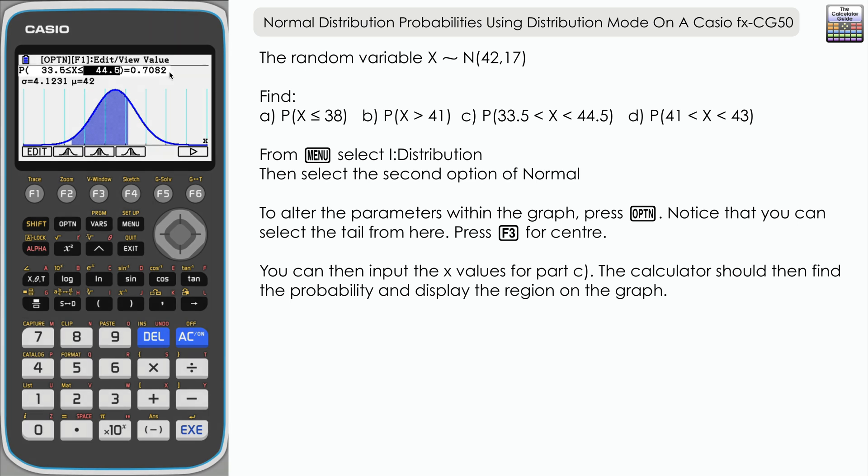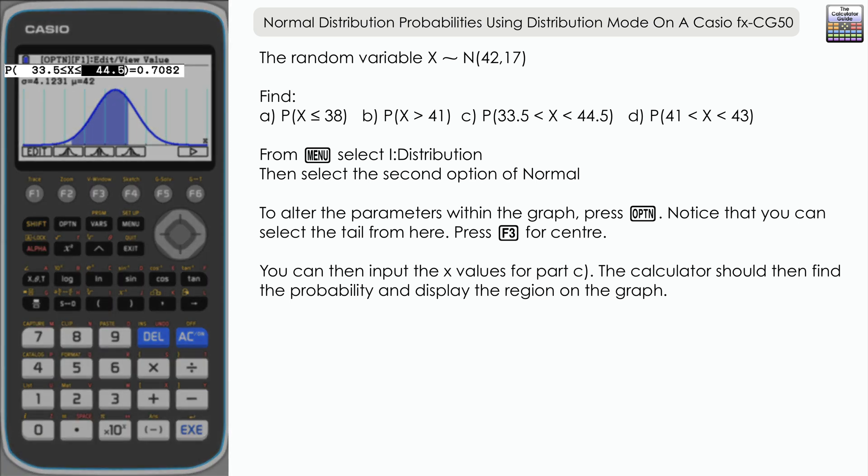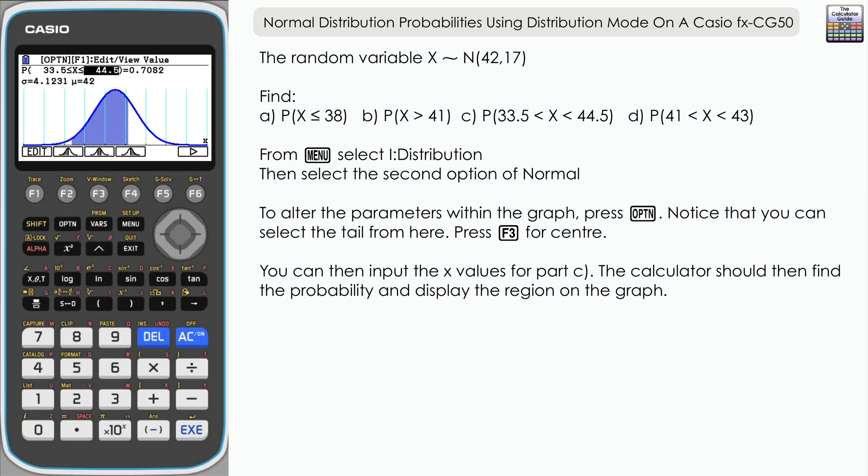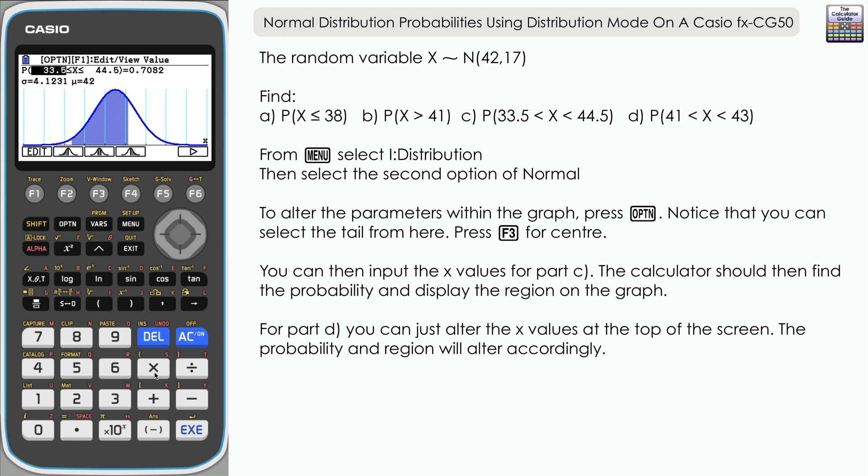For part D, we can remain within the graph function and just edit the values for our lower and upper bounds. So lower bound there of 41 and an upper of 43—press execute. We've got a smaller, narrower region here and therefore a smaller probability: 0.1916.